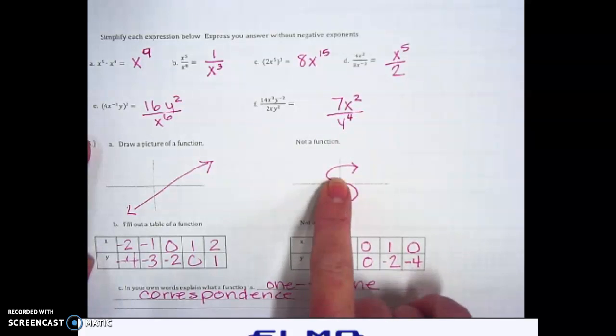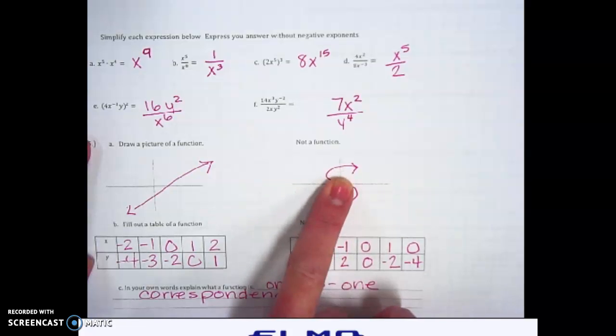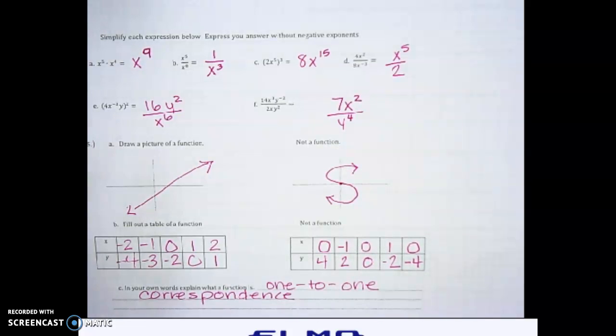And so if you would have 0, 4, 0, 0, and 0, negative 4 makes it not a function. So that's a function.